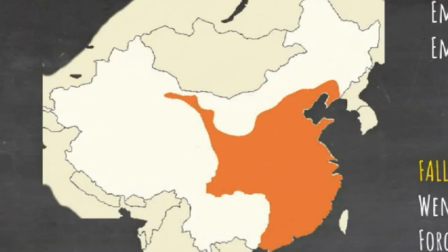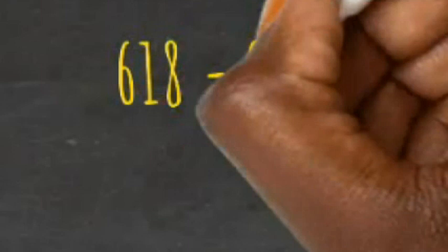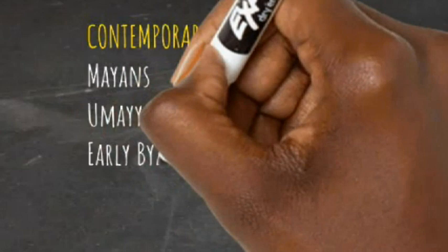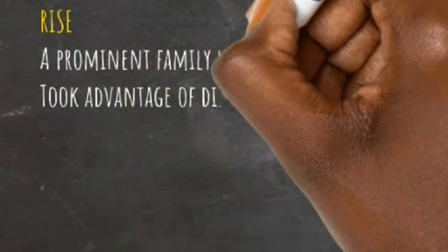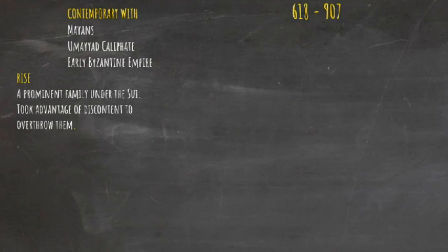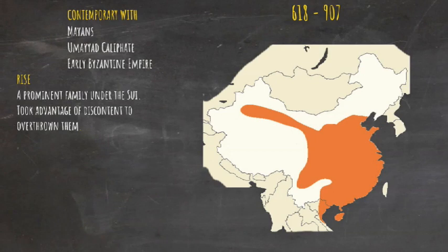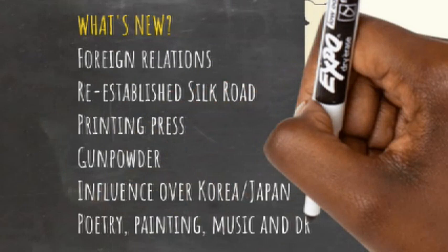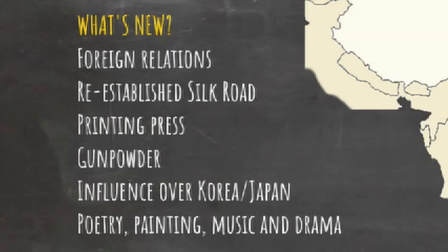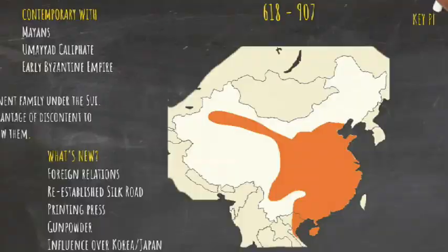The Tang ruled for almost three centuries, from 618 to 907 CE, contemporary with the Mayans, the Umayyad Caliphate and the early Byzantine Empire. The Tang had been a prominent family under the Sui and seized power under Li Yuan, who was deposed by his son Li Shimin, later known as Tang Taizong, considered one of the greatest rulers in Chinese history. It was a dynasty that saw greater contact with the outside world, partly through the re-establishment of the Silk Road. It was also during the Tang dynasty that the only empress of China, Wu Zetian, or Wu Zhao, made her mark, ruling the whole country for almost half a century in an attempt to forge a new dynasty.